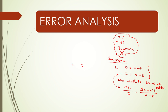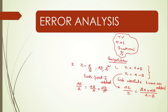For the second part, where Z equals A divided by B, or A raised to the power N, each fractional error is added together. Delta Z by Z equals Delta A by A plus Delta B by B.